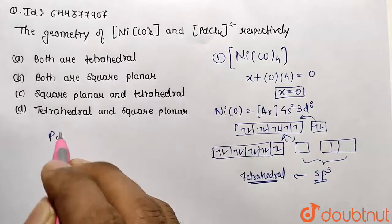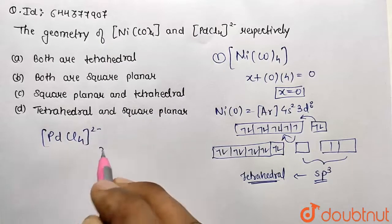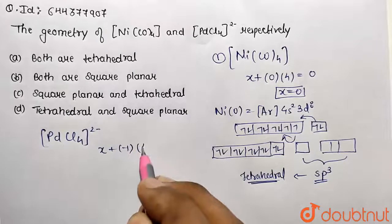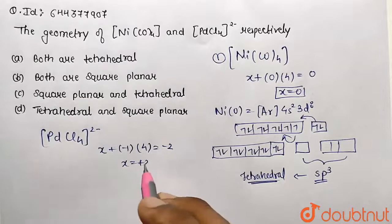Now consider the second complex, PdCl₄²⁻. Calculate the oxidation state: x + (-1)(4) = -2, so x = +2.